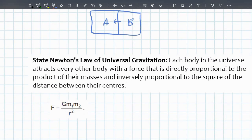And then we'll move on to Newton's fourth law. And that's basically stating that each body in the universe attracts every other body with a force that is directly proportional to the product of their masses and inversely proportional to the square of the distance between the centers.